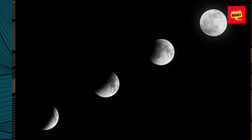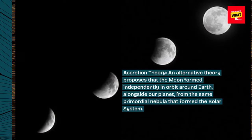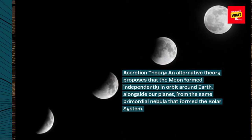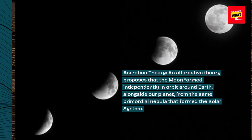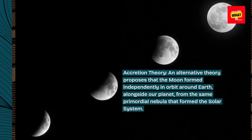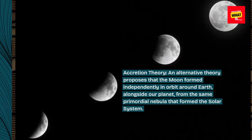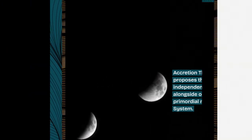An alternative theory, the Accretion Theory, proposes that the Moon formed independently in orbit around Earth, alongside our planet, from the same primordial nebula that formed the Solar System.